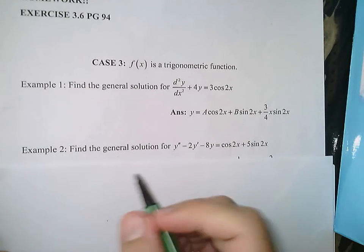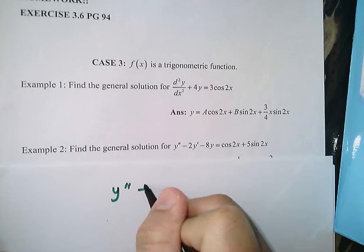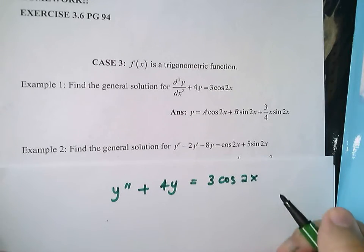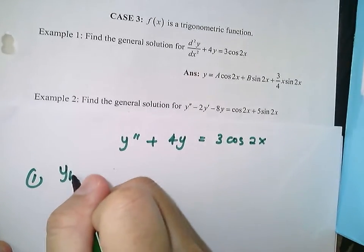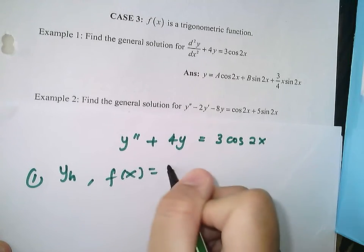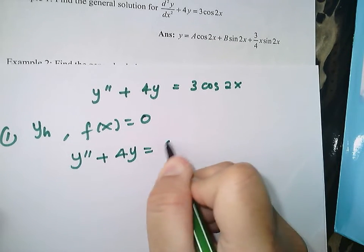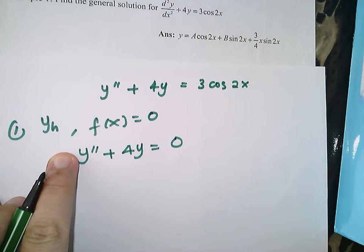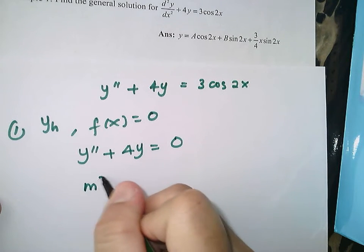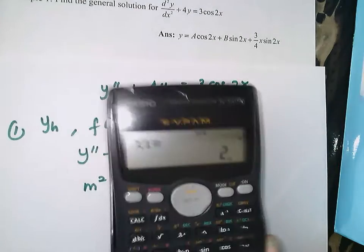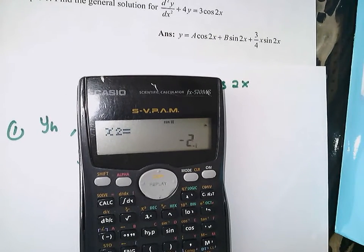You are asked to find the general solution for y'' + 4y = 3cos(2x). The first step is to find yh by assuming f(x) = 0, so you have y'' + 4y = 0. Express this as a characteristic equation: m² + 4 = 0. Solving for m gives you m = ±2i.